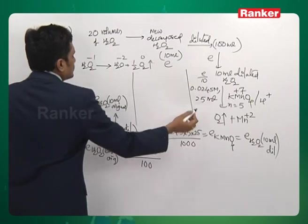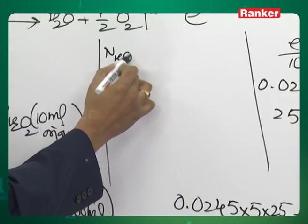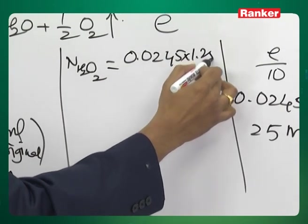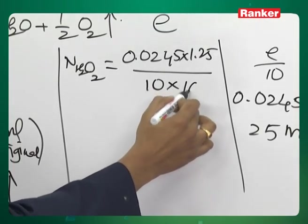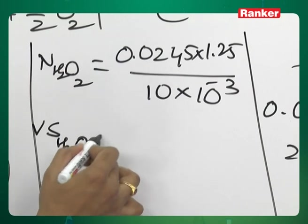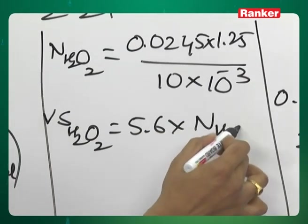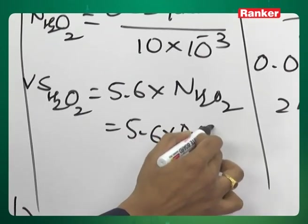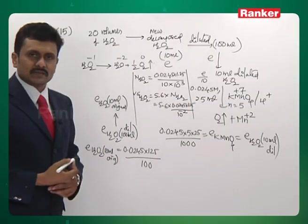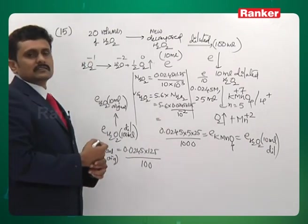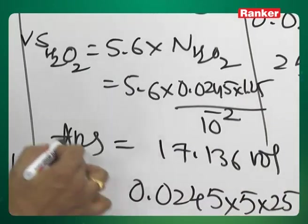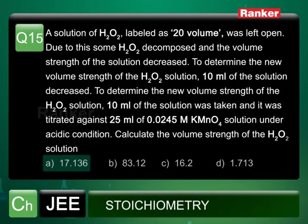Normality of H₂O₂ = gram equivalences of H₂O₂ / volume in liters. The volume strength of H₂O₂ = 5.6 × normality. Multiplying the normality by 5.6 gives the final volume strength as 17.136 volumes — which has decreased from the original 20 volumes, confirming decomposition.